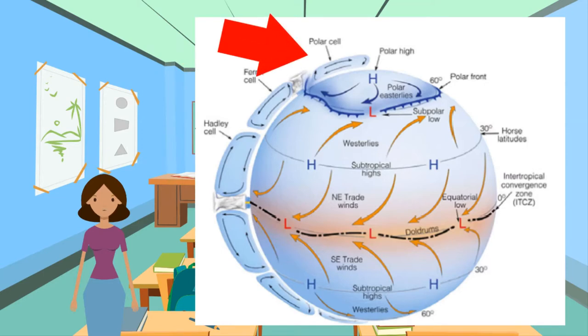3. The Polar Cell: at 60 degrees north or south of the equator, moist air rises and travels to the poles where it sinks.